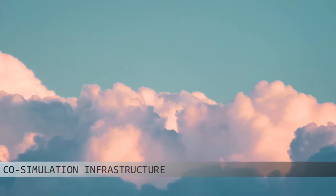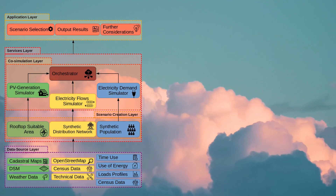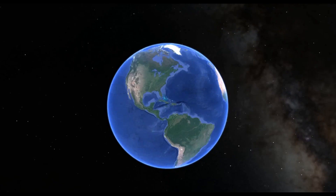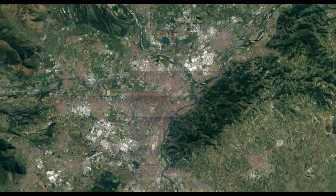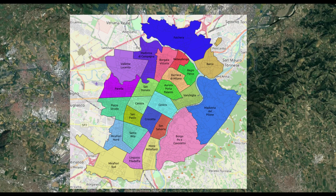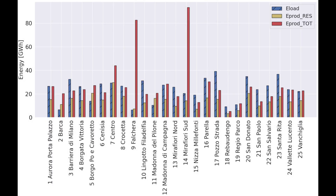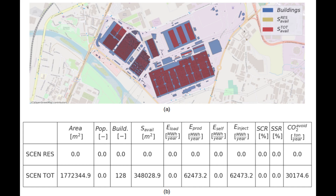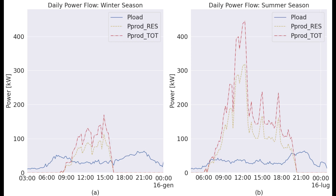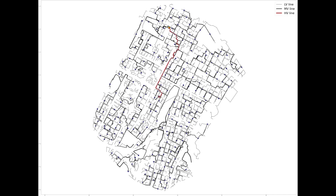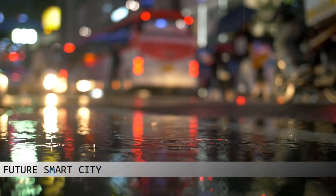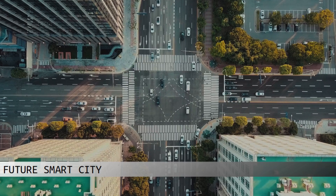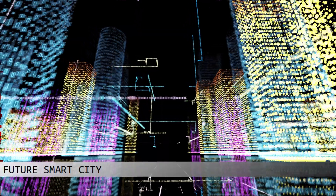An innovative co-simulation infrastructure is created, composed of a modular framework which allows performing different power grid scenario simulations. The city of Turin is chosen as the first case study in order to test the proposed methodology. Building rooftop PV integration is assessed together with the analysis of household electricity demand. The high spatiotemporal discretization employed enables accurate estimation of both energy profiles and environmental indicators, promoting understanding of urban energy systems and the integration of renewable energy sources in the context of future smart cities.